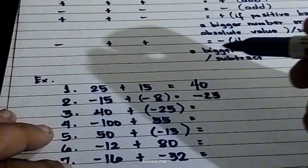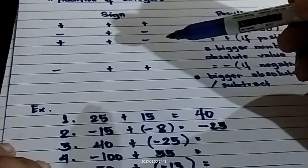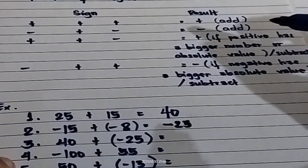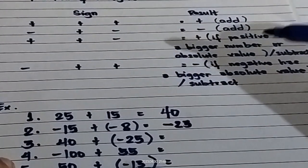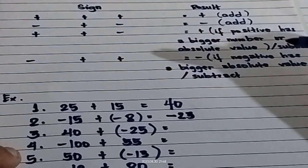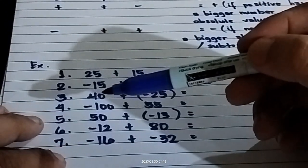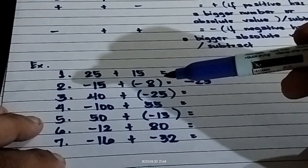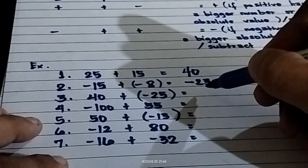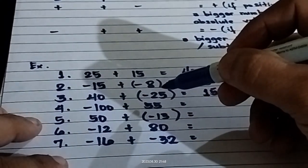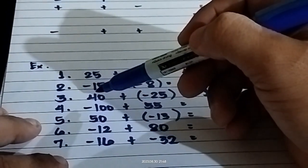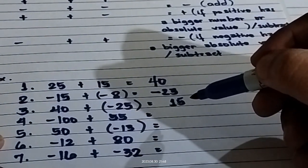For number three: positive plus negative. We have 40 plus negative 25. They are unlike signs, so you're going to subtract: 40 minus 25. The answer is 15. Between 25 and 40, the number 40 has the bigger absolute value, so the answer is positive 15.